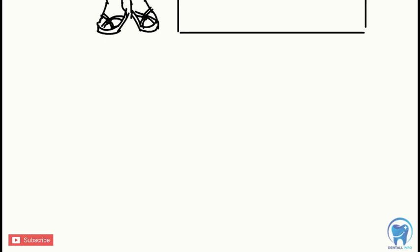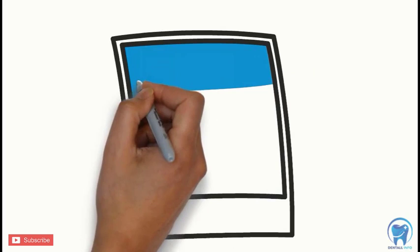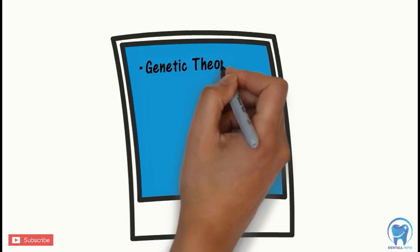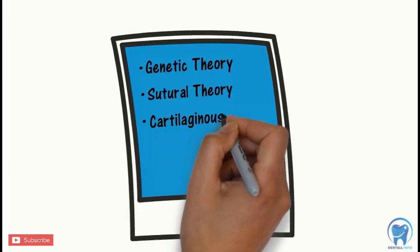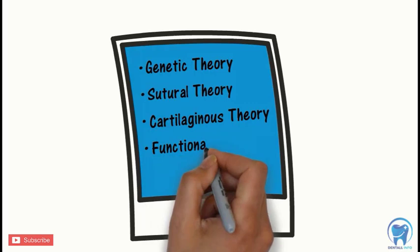So let's just summarize the different theories of growth which we have covered today in this video. First was the genetic theory. Second was the sutural theory. And third was the cartilaginous theory. The next theory, which is the functional matrix theory, which is another important topic, will be covered in our next video.